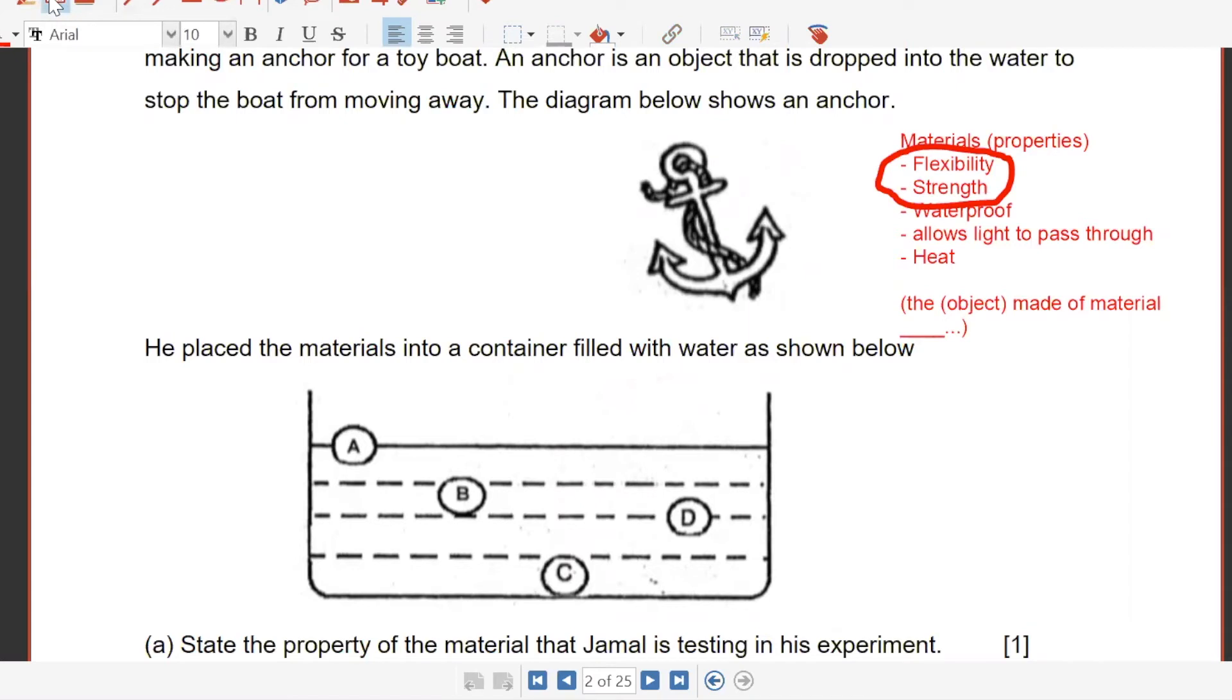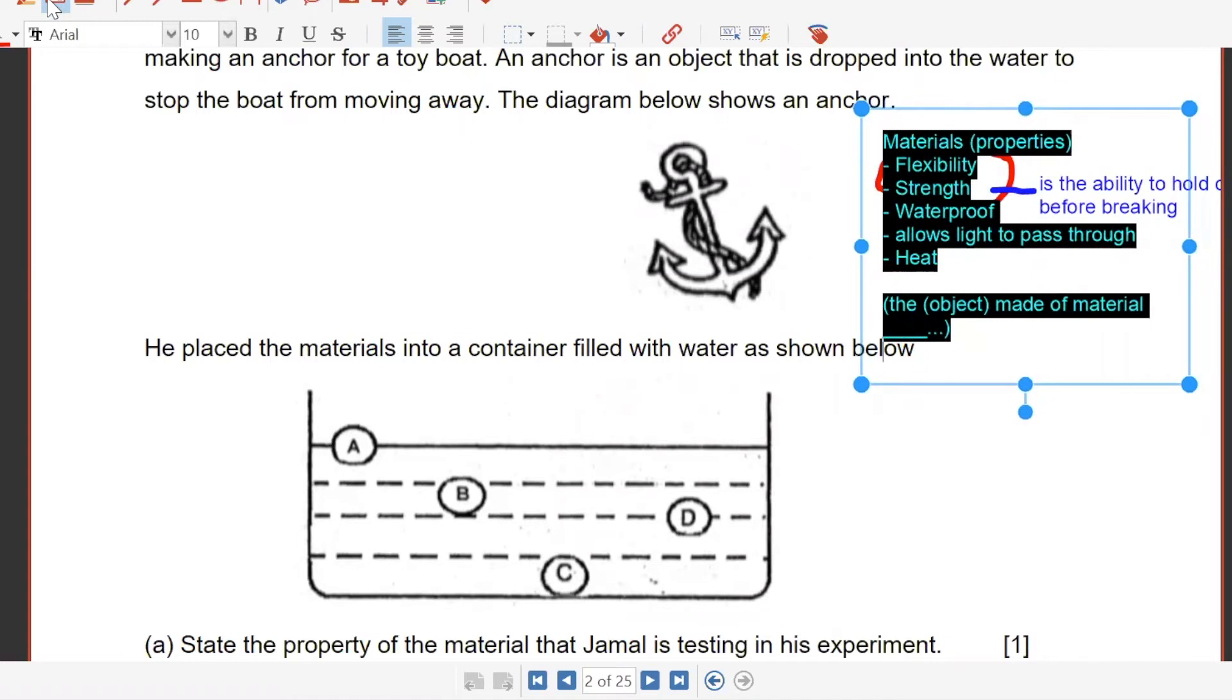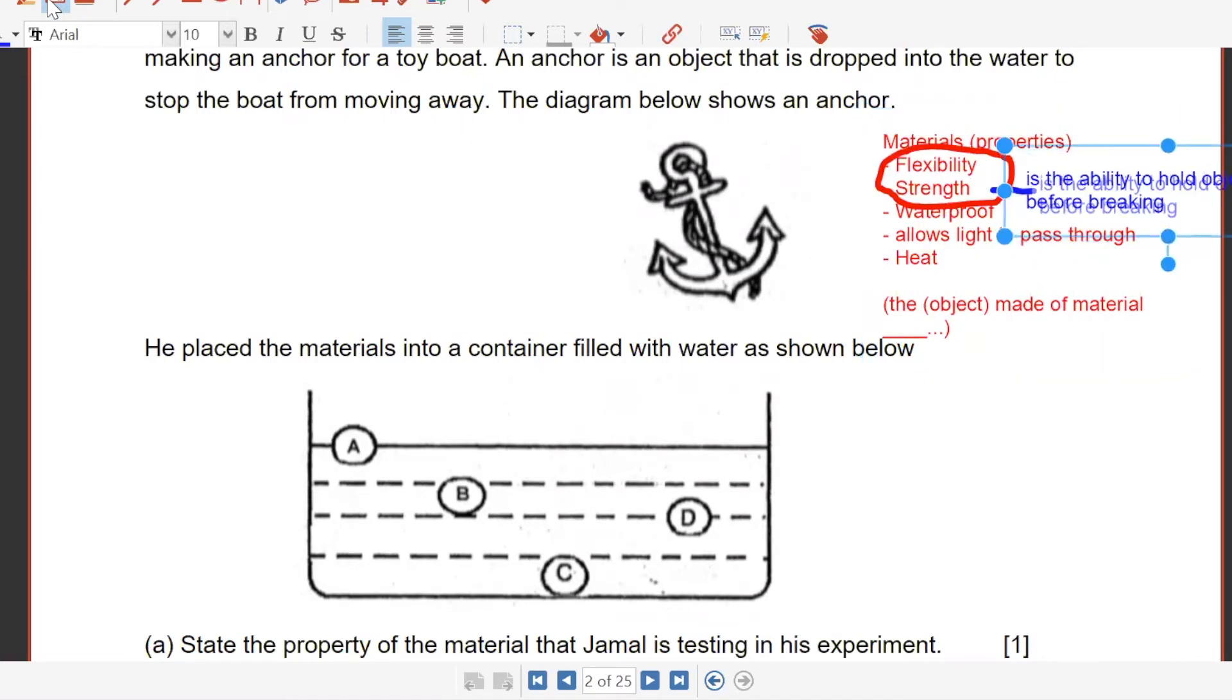Flexibility is different from strength. What's the difference between the two? Basically, both will also break. You are trying to test the threshold of each of the material based on the strength and flexibility. The difference is that for strength is the ability to hold objects before breaking. For flexibility is the ability to bend before breaking. You can bend, but it depends on how flexible the object is before it starts to break. That's the difference. One is bend, one is hold the heavy objects.